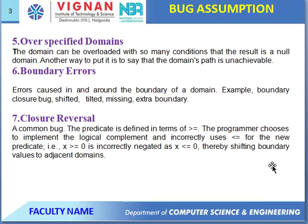Next: Boundary Errors — errors that occur in and around the boundaries of a domain. Examples include boundary closure bugs, shifter box (left-side and right-side shifter box), missing values, and extra boundaries. Next: Closure Reversal — a common bug where a predicate defined in terms of 'greater than or equal to' has its logical complement incorrectly implemented, using 'less than or equal to' instead.